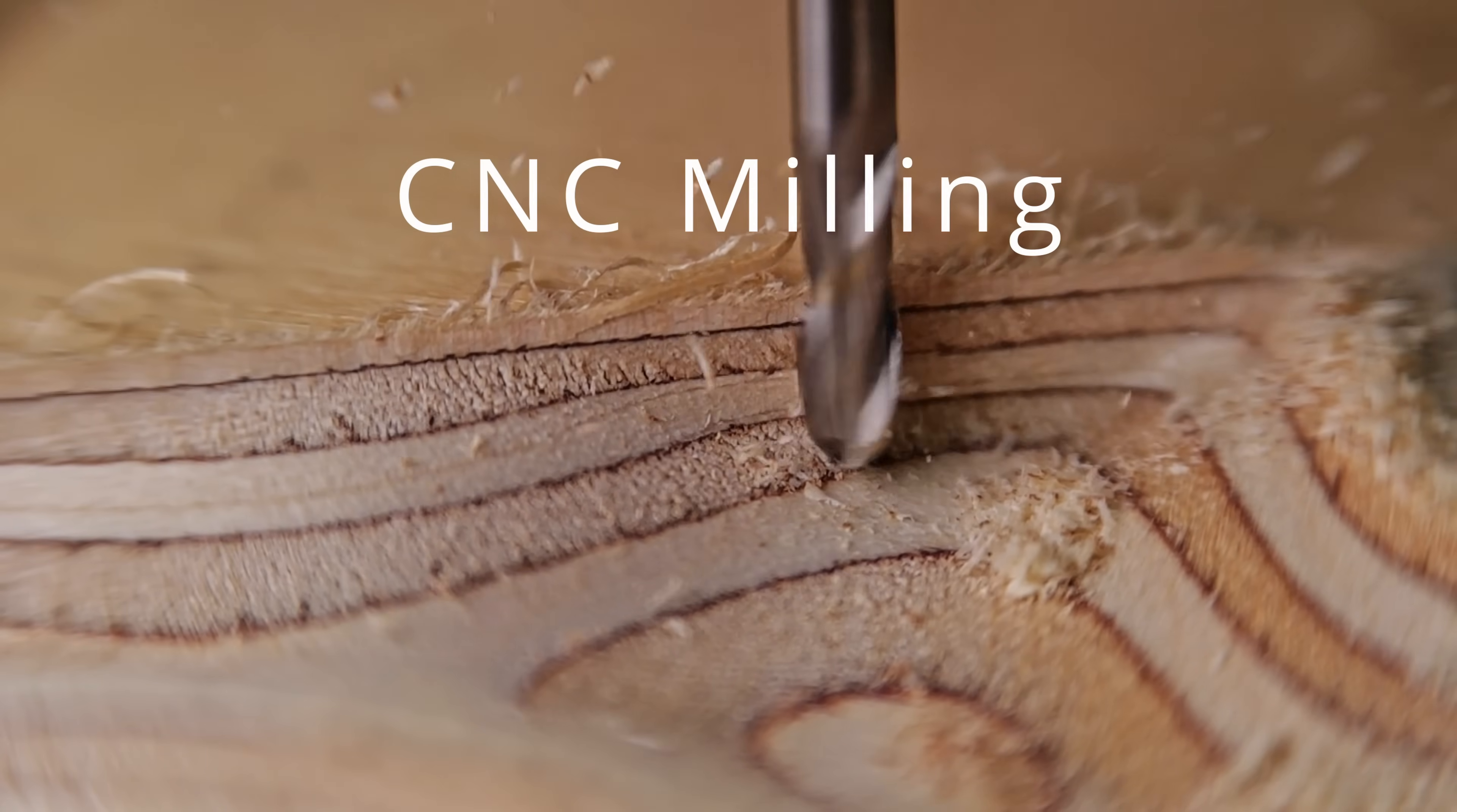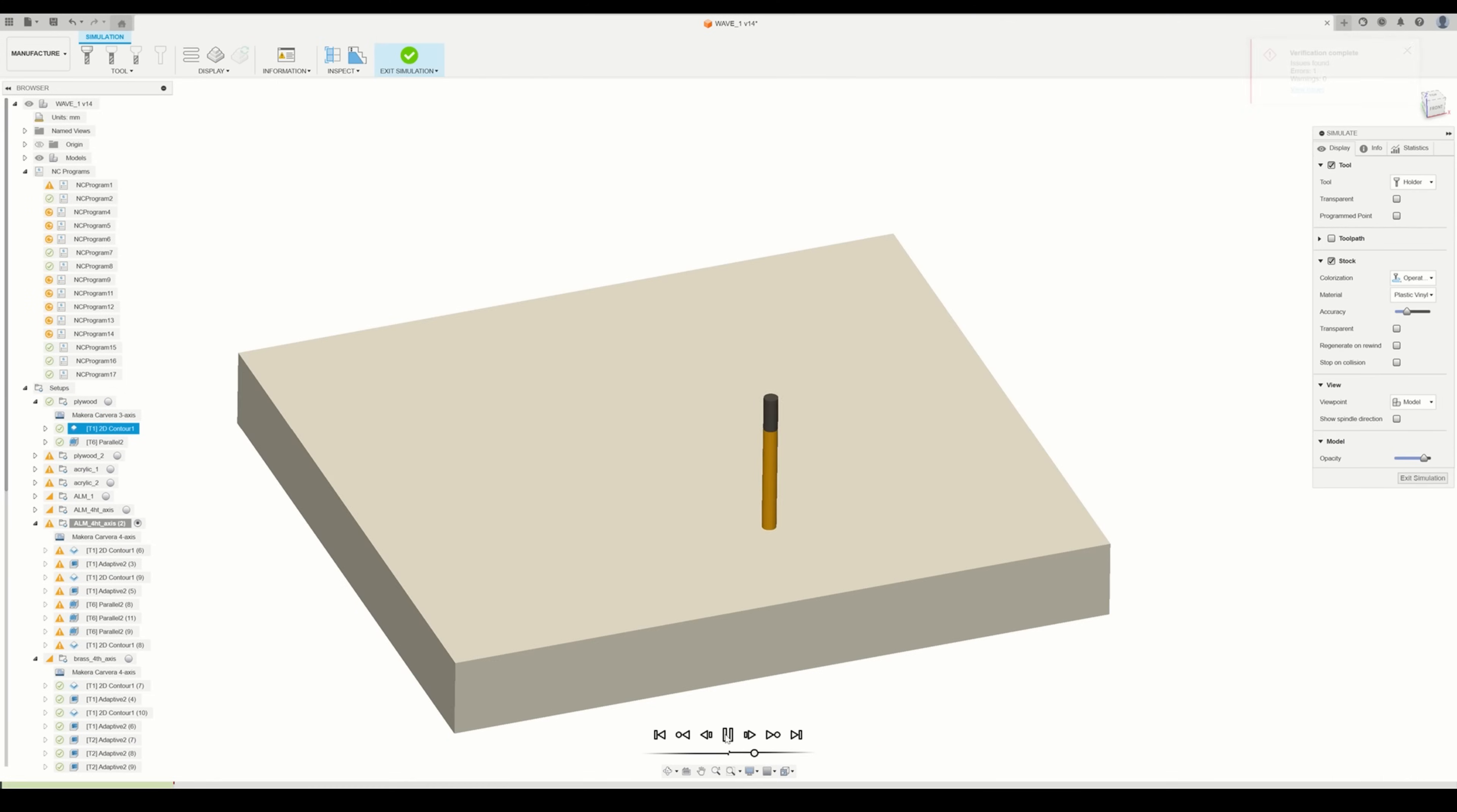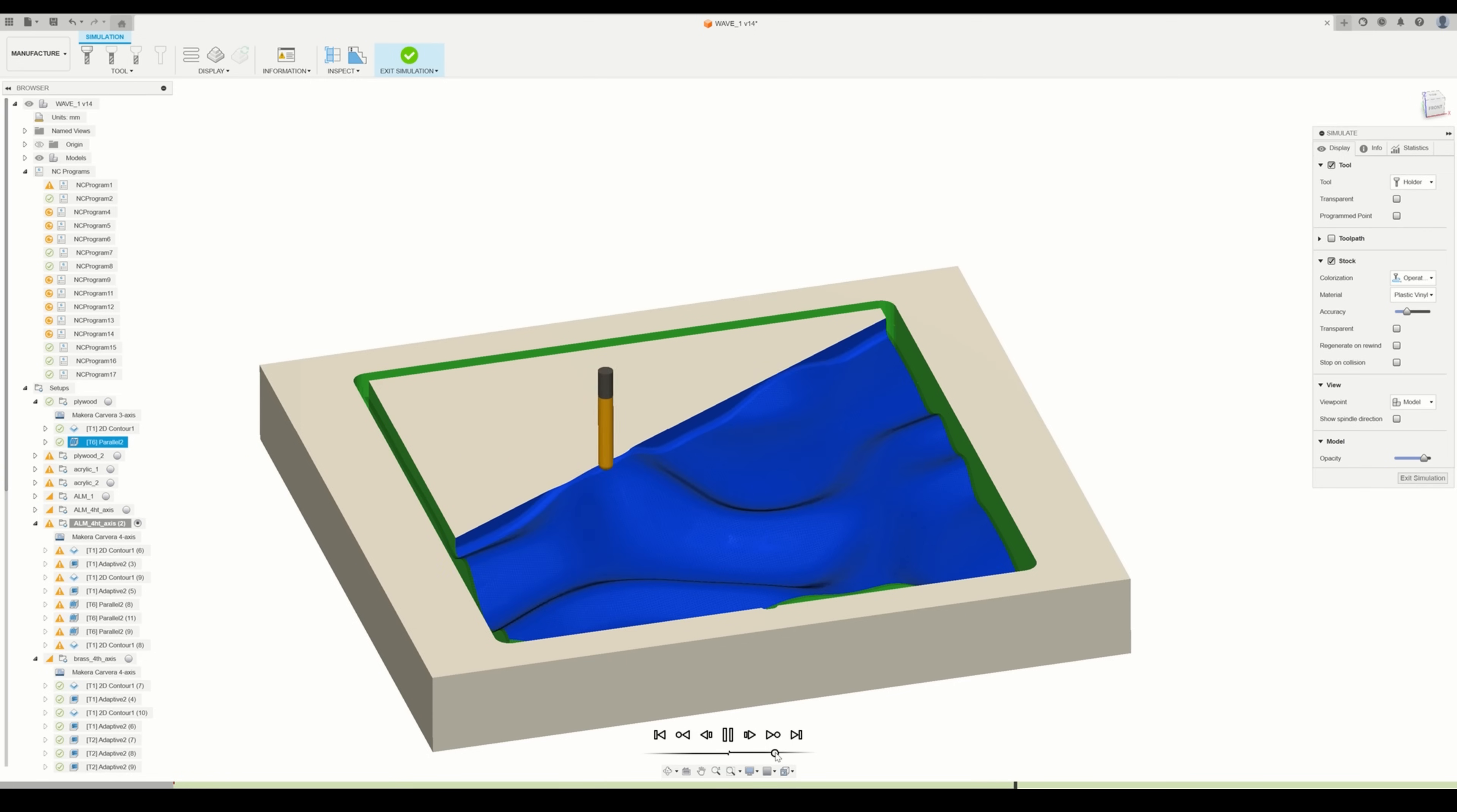Now I've got the waves it's time for some CNC machining. For the first test I'm going to use a piece of scrap 18mm baltic birch plywood. Very nice and easy basic toolpath for this one. First a contour operation to cut out the part, then a parallel finish toolpath with a ball nose end mill to do the surfacing.